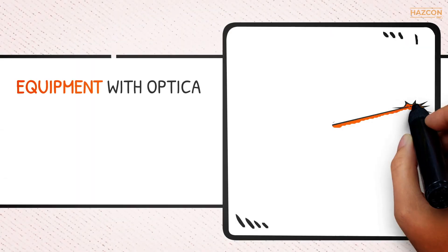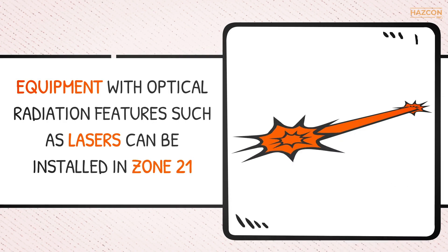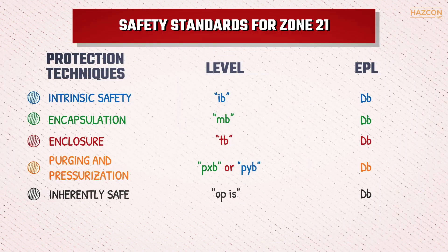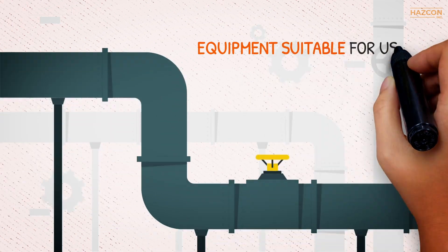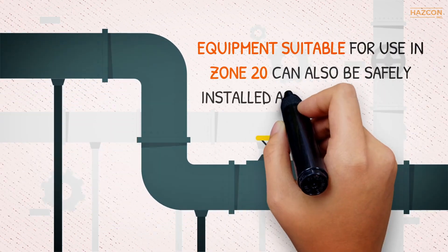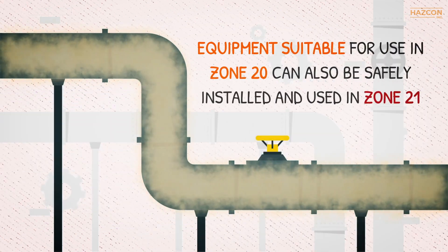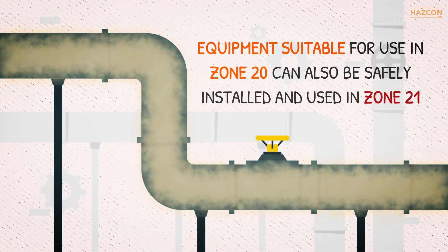Equipment with optical radiation features such as lasers can be installed in Zone 21 if the optical power is inherently safe using OPIS protection, or an interlock system complying with OPSH protection, or using protected optical radiation complying with OPPR, with an equipment protection level (EPL) of DB. Equipment suitable for use in Zone 20 can also be safely installed and used in Zone 21.